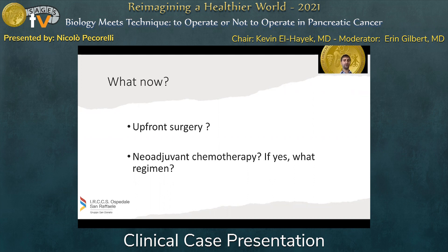So this is an old man with resectable pancreatic cancer but an elevated CA 19-9. Would you go for upfront surgery? Is there room at this age for neoadjuvant chemotherapy, and if yes, what type of treatment? Thank you all very much for listening — I'll leave you to the discussion and I hope this was helpful. Enjoy the rest of the meeting.